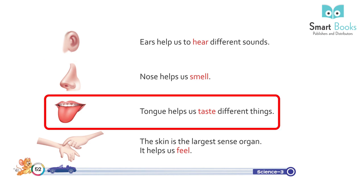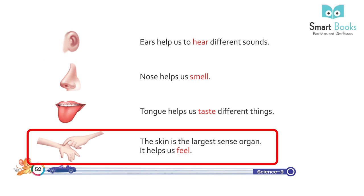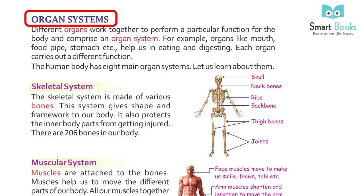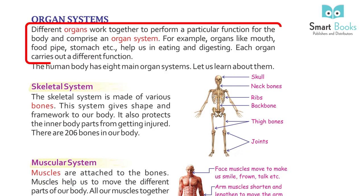Eyes help us see things around us; ears help us hear different sounds; nose helps us smell; tongue helps us taste different things. The skin is the largest sense organ – it helps us feel. Different organs work together to perform a particular function for the body and comprise an organ system.